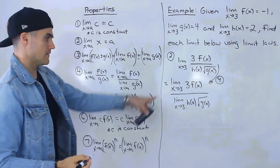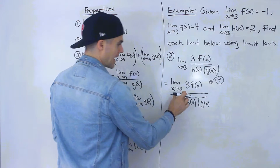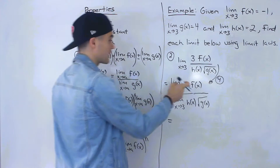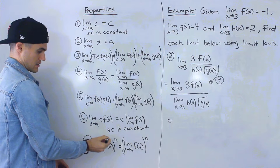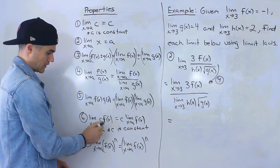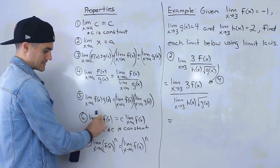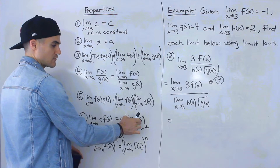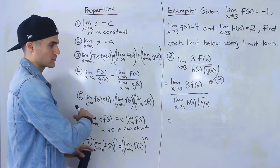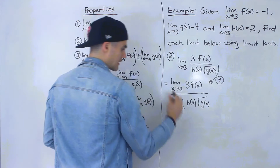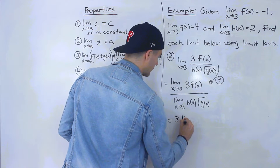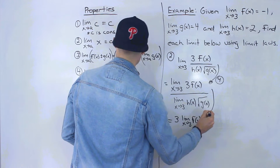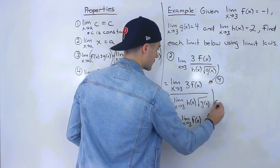In the numerator, notice that we have the limit as x approaches 3 of 3 times f of x — a constant times f of x. Looking at the laws, we can use the constant multiple law: the limit as x approaches a of a constant times f of x equals the constant times the limit as x approaches a of f of x. So we factor out that 3 and have 3 times the limit as x approaches 3 of f of x. We use law number 6 for that.